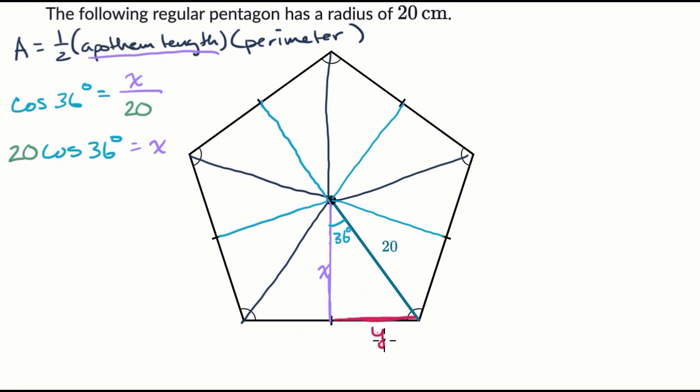Well, we could either use sine or we could use cosine now that we know x. Let's use sine. Sine deals with opposite over hypotenuse. So we could say that the sine of 36 degrees is equal to opposite over hypotenuse, is equal to y over 20. Or that y is equal to 20 times the sine of 36 degrees.